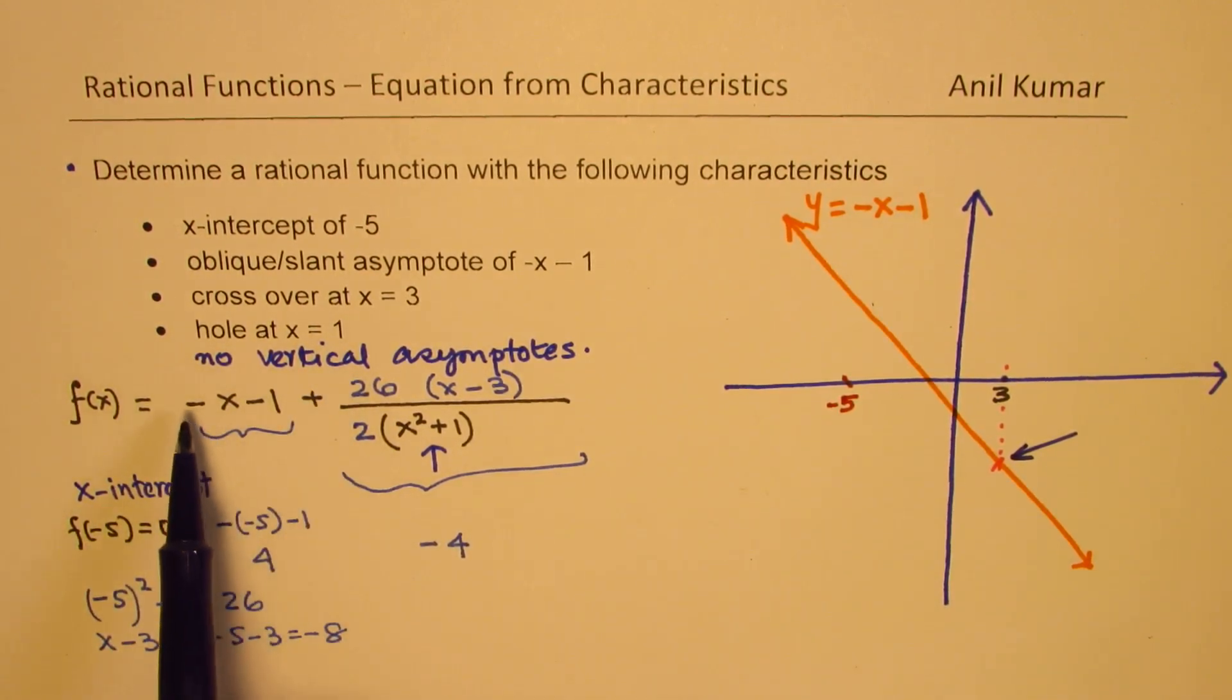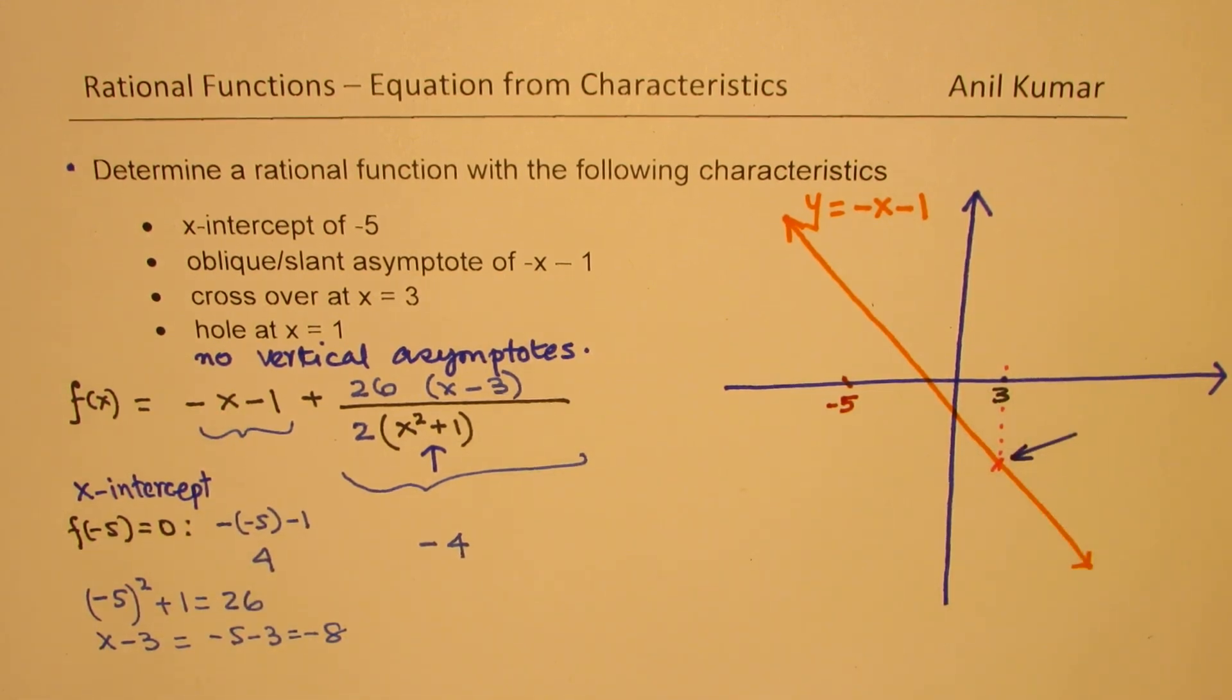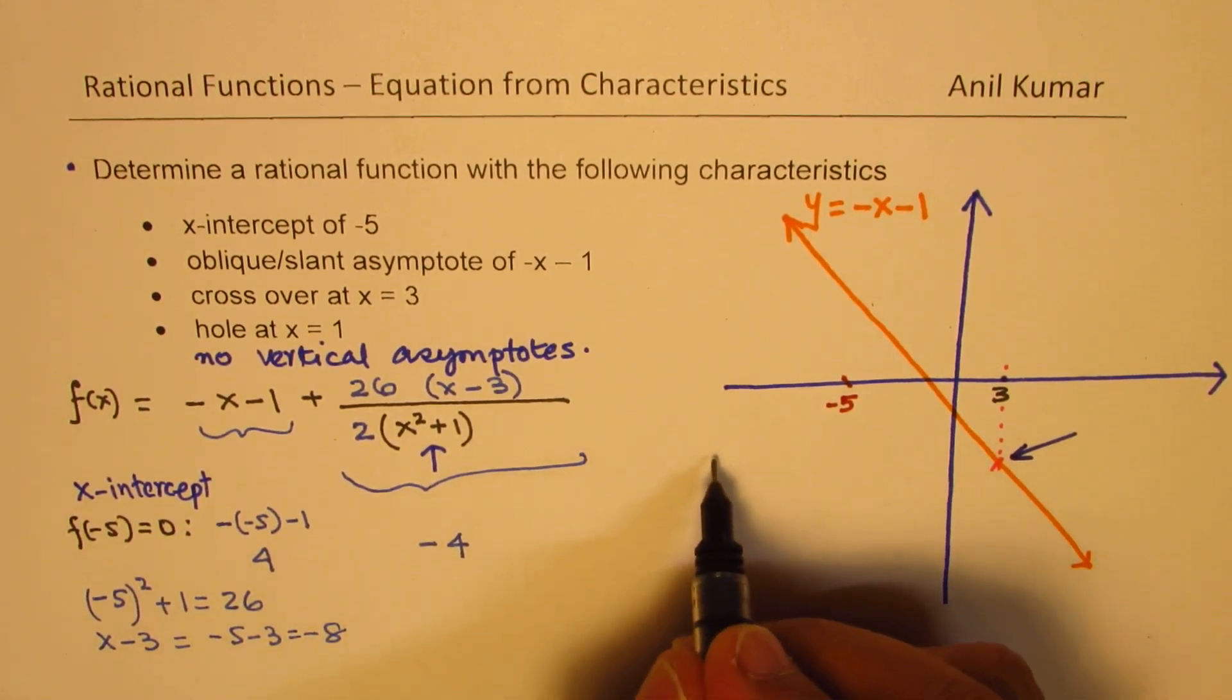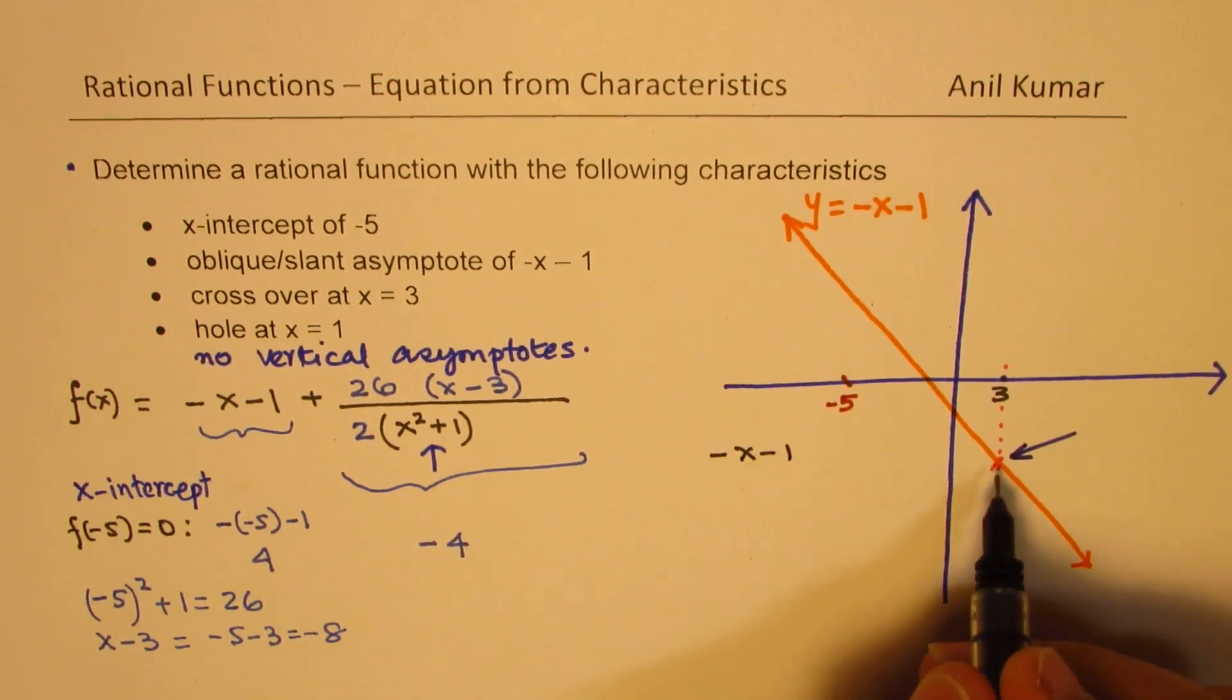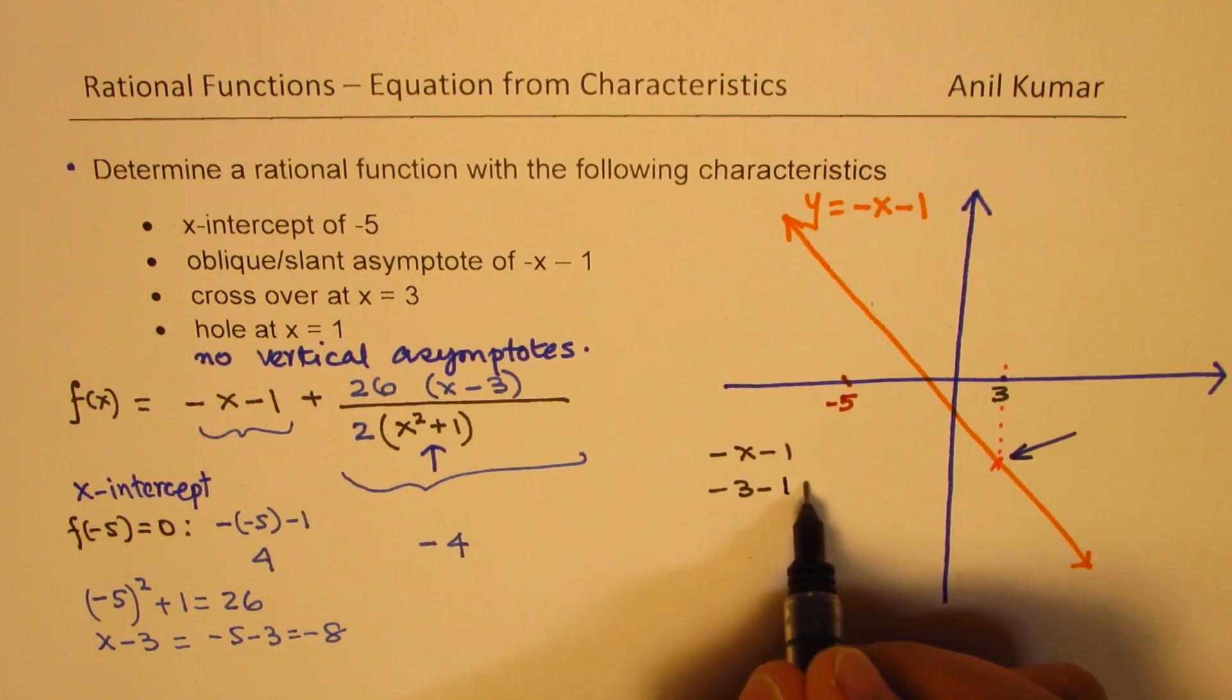Now, for minus x minus 1, let's work on this. If I substitute in minus x minus 1 the value 3, that means we get minus 3 minus 1, which